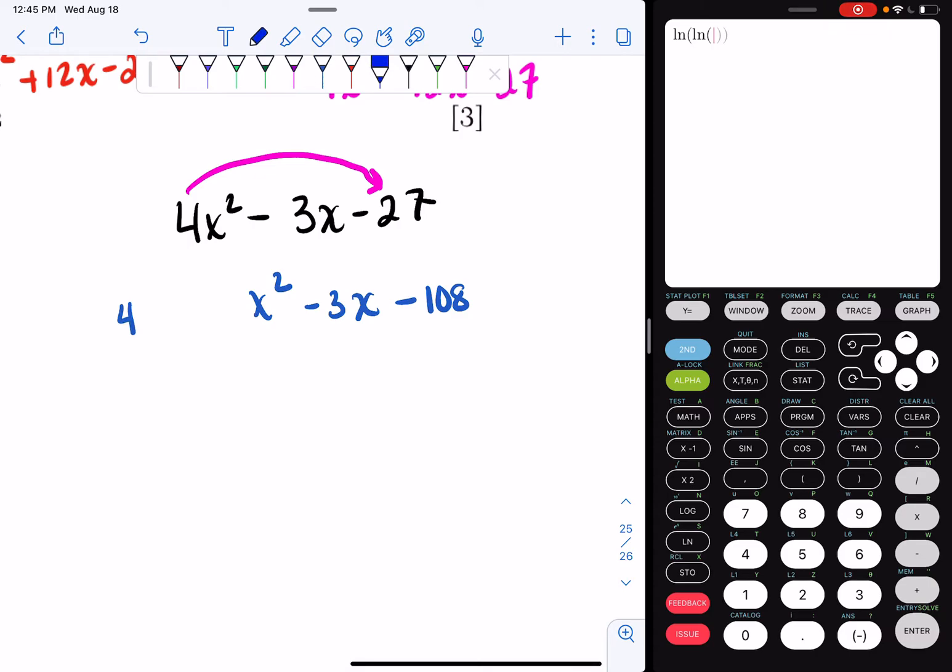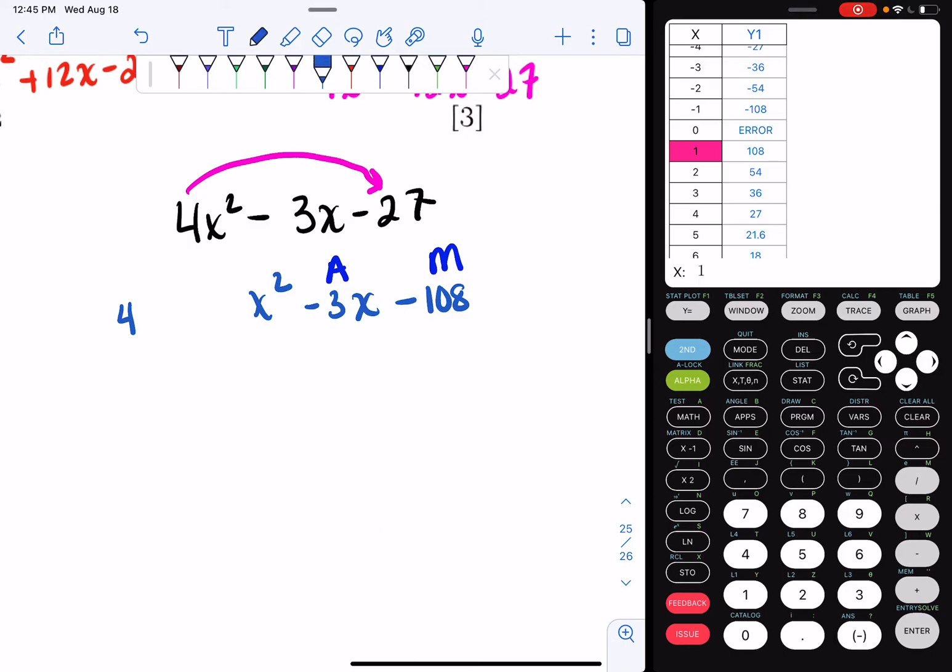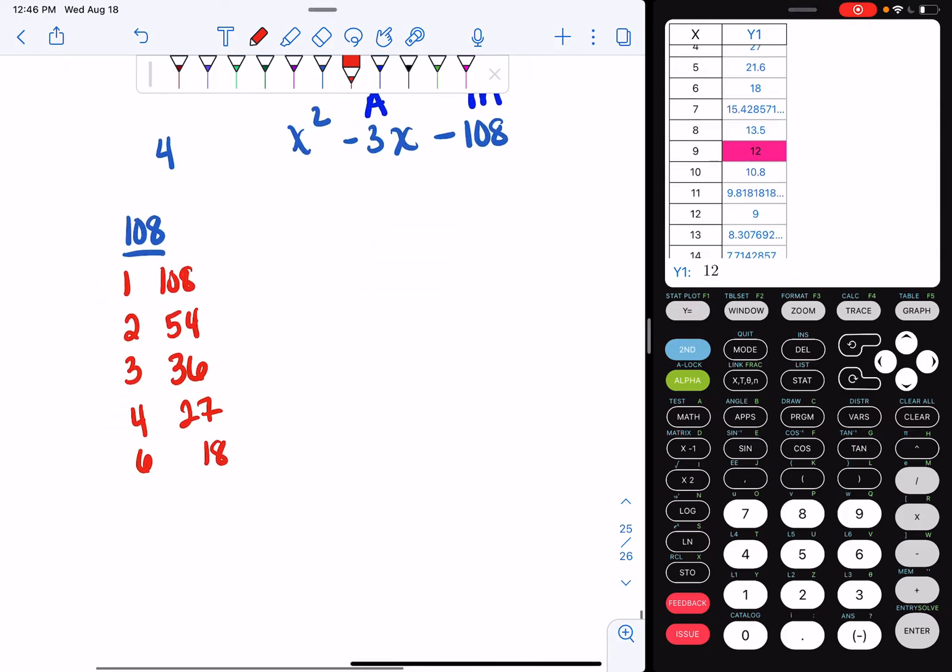So I want to find out the numbers that add up to negative 3 and multiply to negative 108. So if I look, I go to y equals. And I type in 108 divided by x. I'm going to do second graph. And I'm only going to look at the numbers larger than zero. The numbers that multiply to 108 are 1 and 108, 2 and 54, 3 and 36, 4 and 27, 6 and 18, 9 and 12. I have a repeat, so I'm not going to write that out. So I found all my factors of 108.